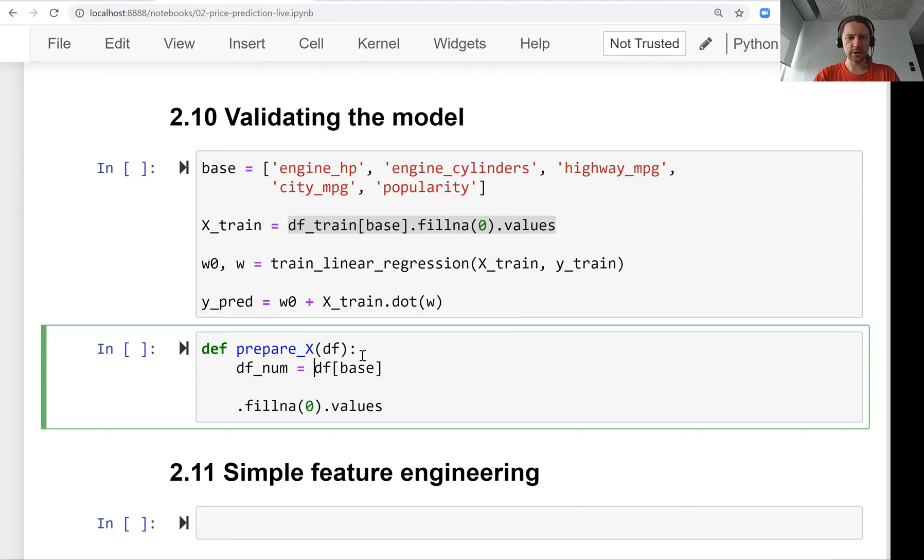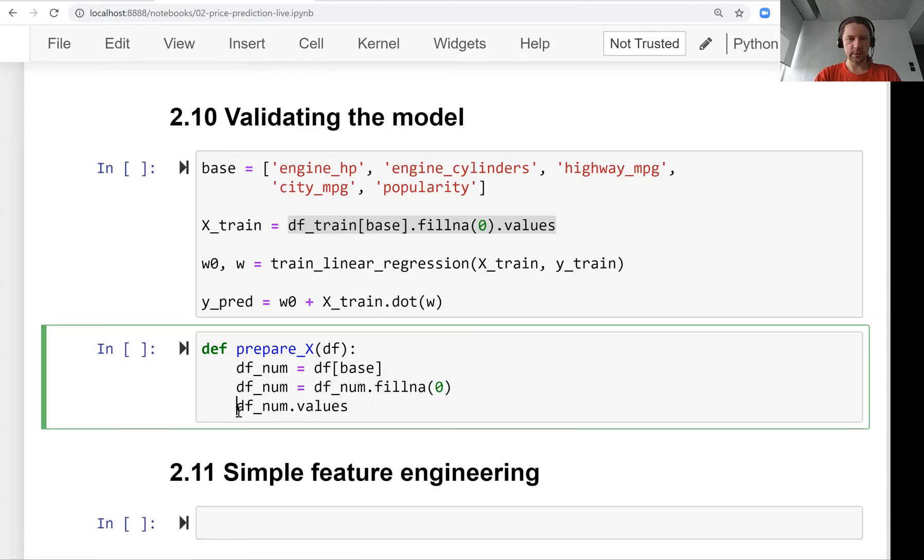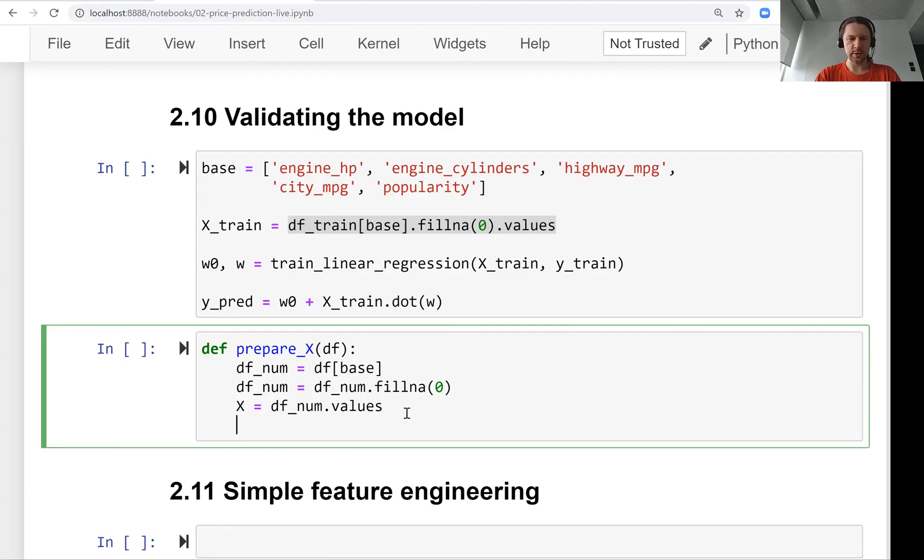So we have the prepare_X function. The first step is selecting the numerical columns, the second step is filling the missing values, and then the third step is extracting the feature matrix as a numpy array and returning it.